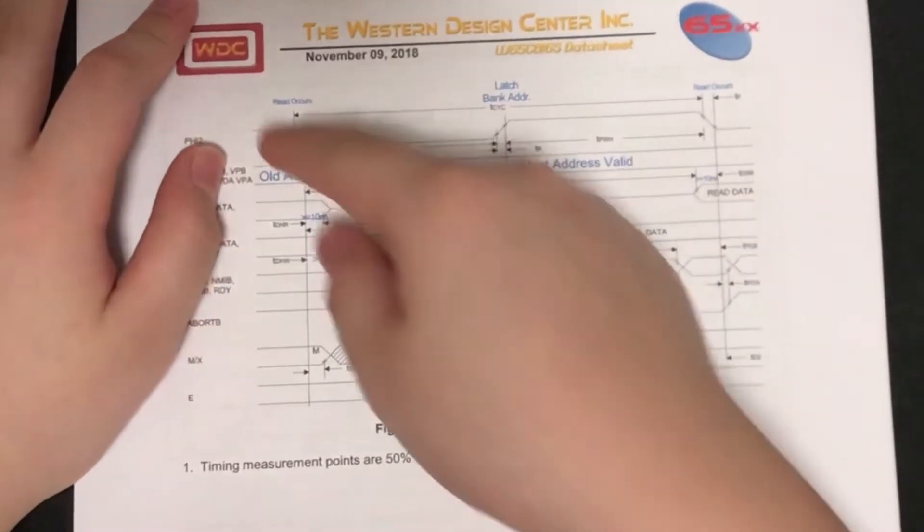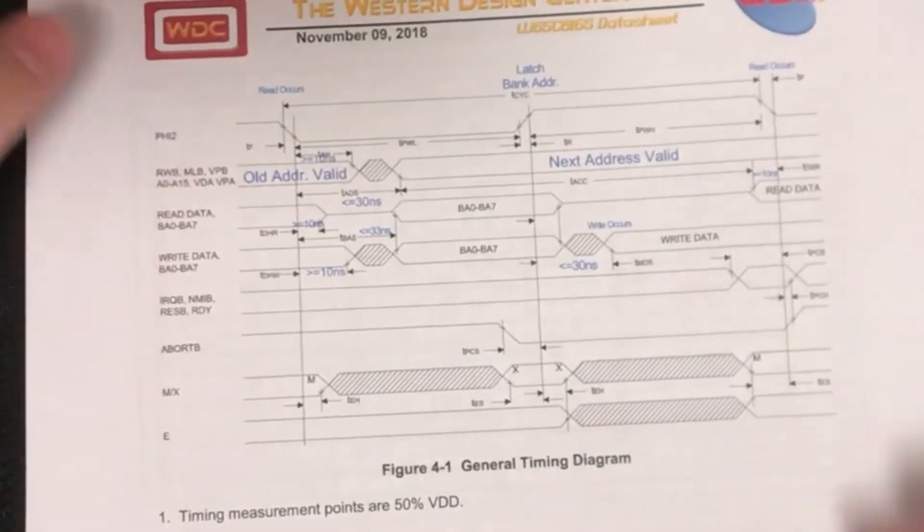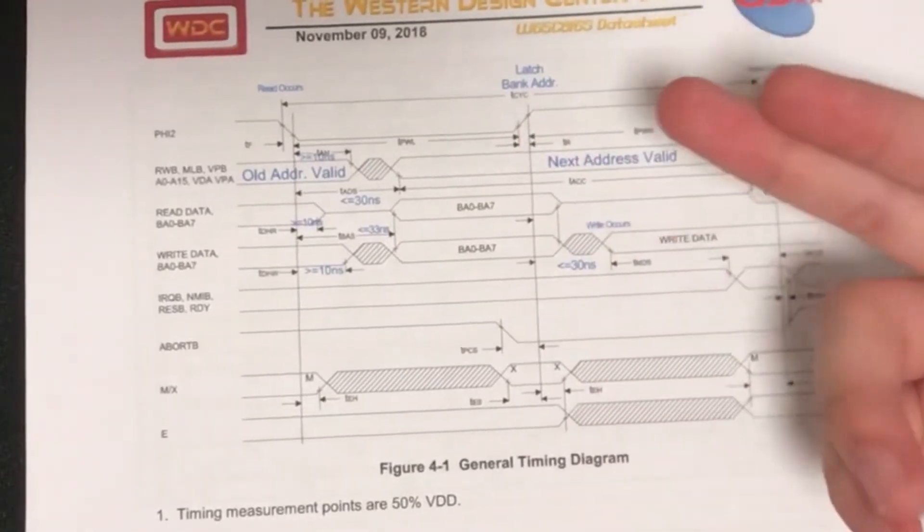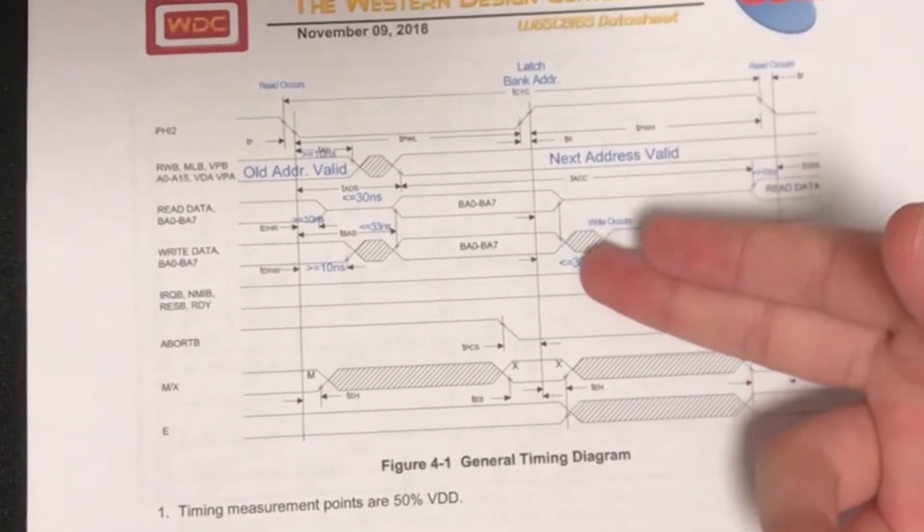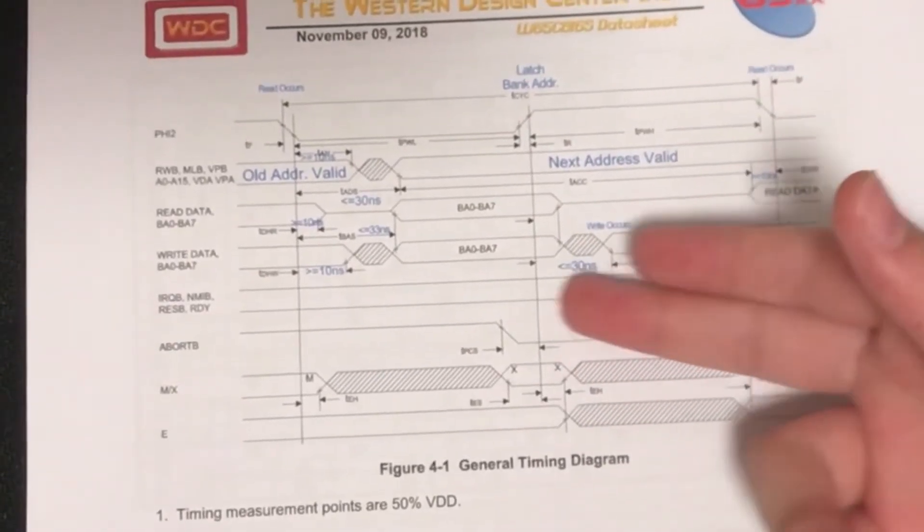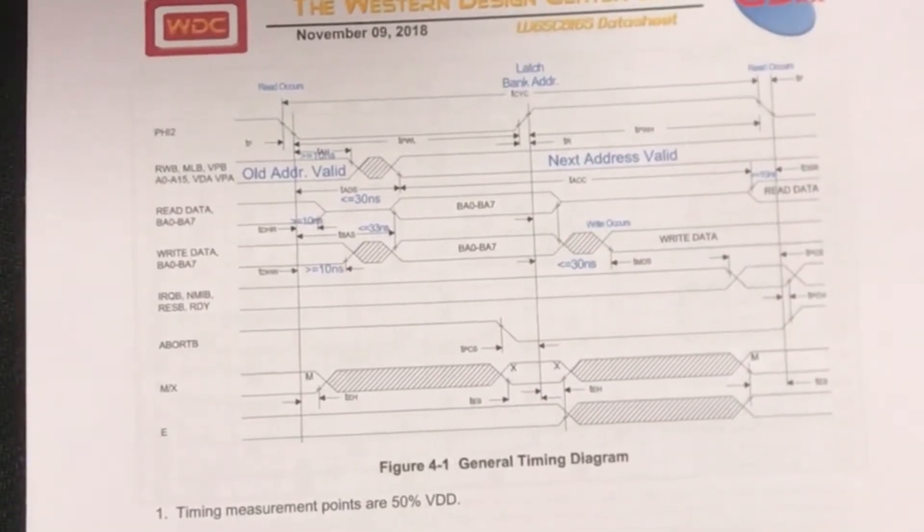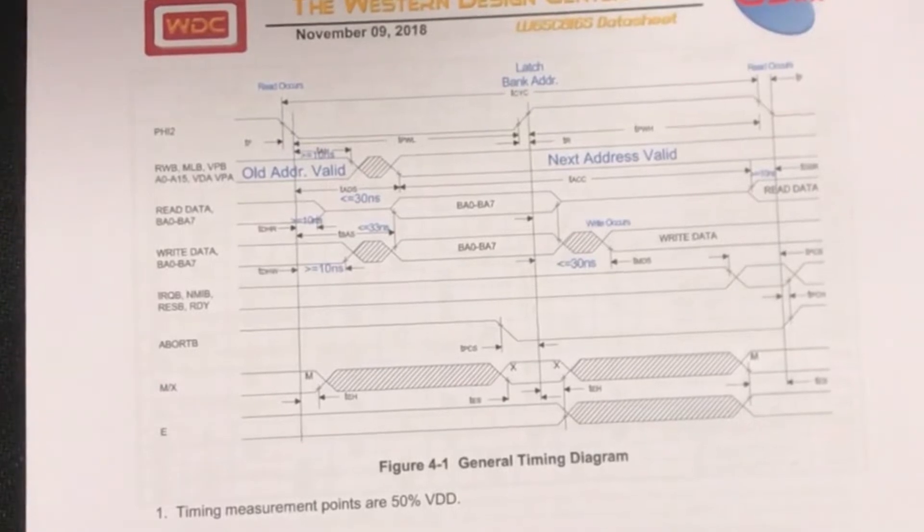When the clock goes low, the processor reads data. When the clock goes high, the processor writes data after a specific amount of time. In this case, it's going to be less than or equal to 30 nanoseconds. But when are the bank address lines available? Well, that's when the clock is high.